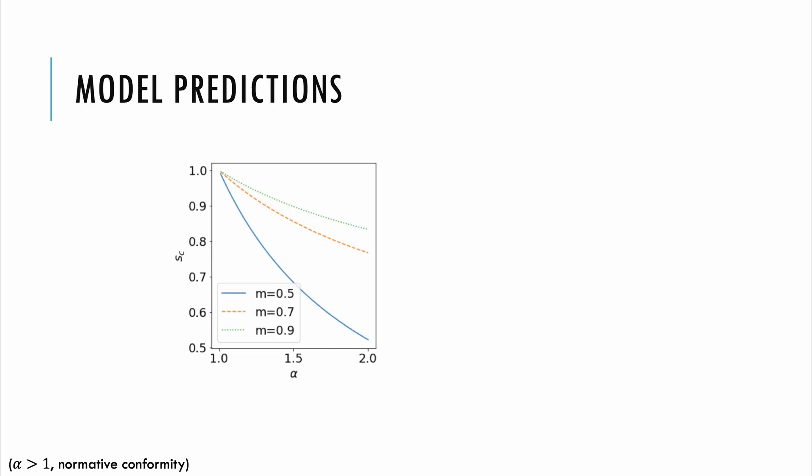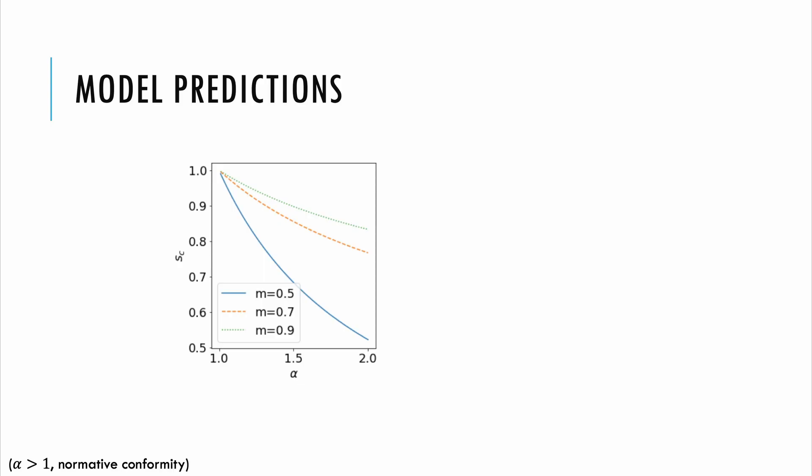A remaining question is: where is this critical transition point? Some solutions are shown in this plot. The critical transition point depends on two variables. We can see that as alpha increases — that is, when social learners respond more nonlinearly to the observed frequency of belief or behavior — the critical threshold for the proportion of social learners decreases. Similarly, when the merit of the two options is closer to a 50-50 split, the critical threshold also decreases.